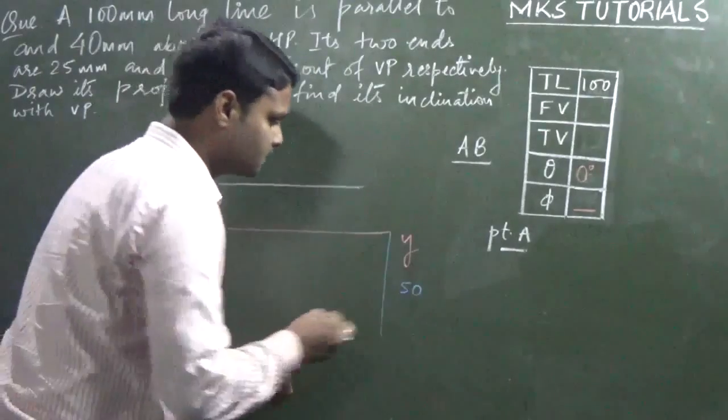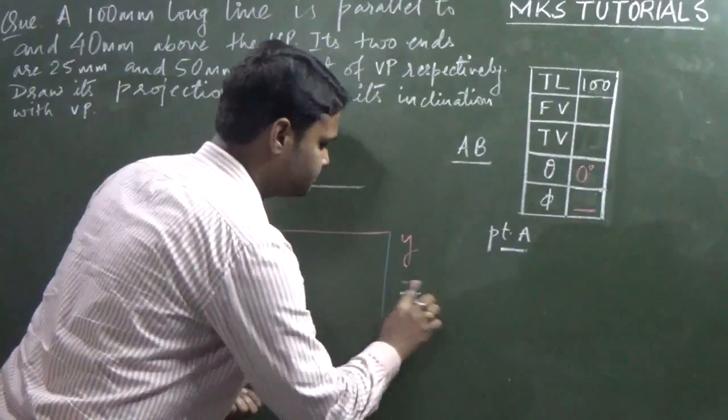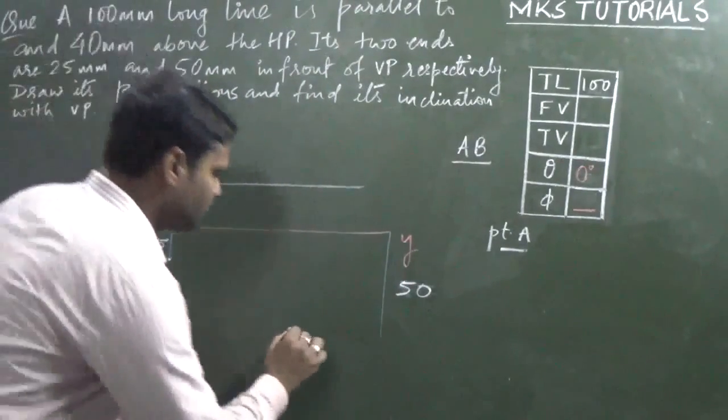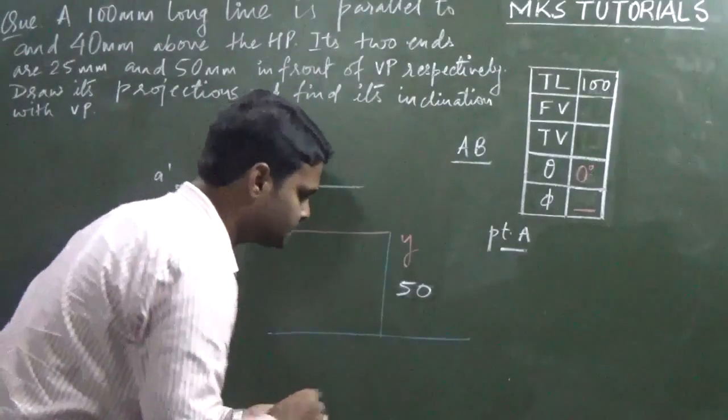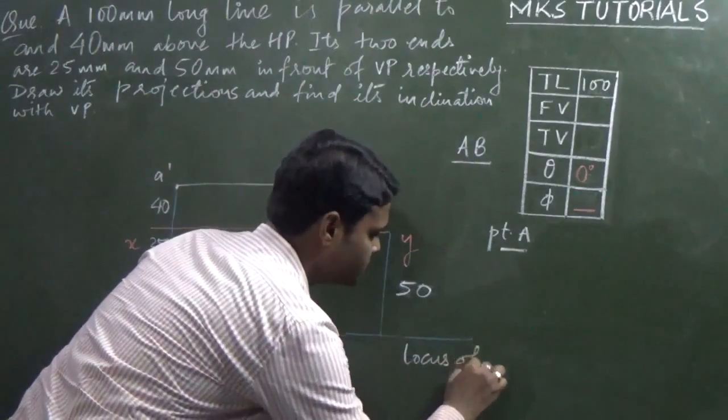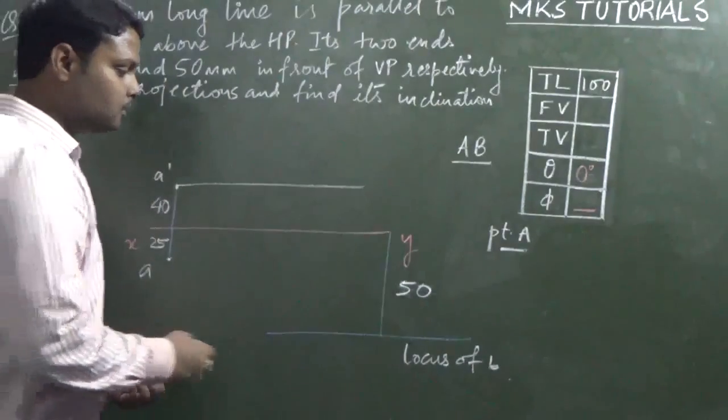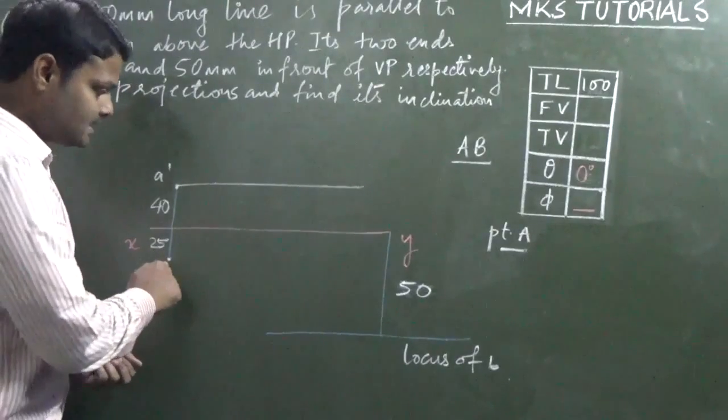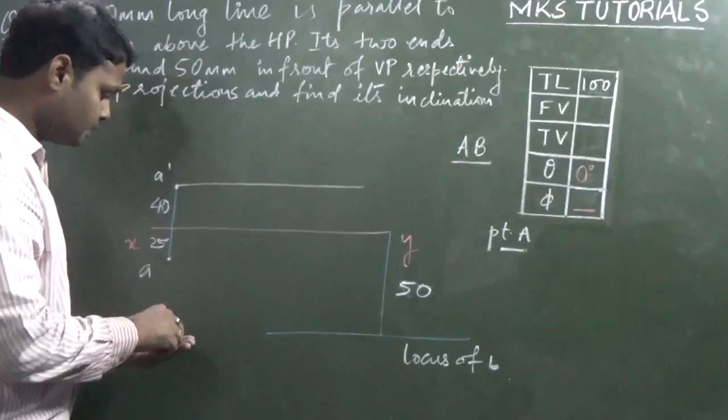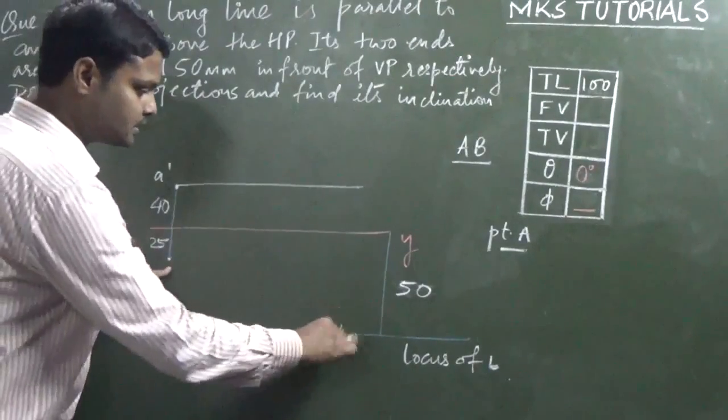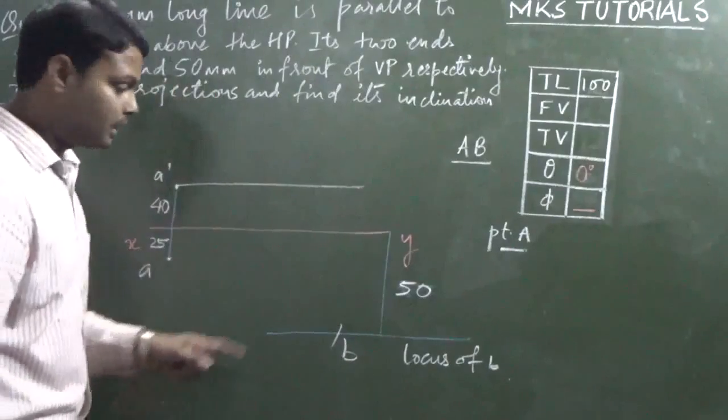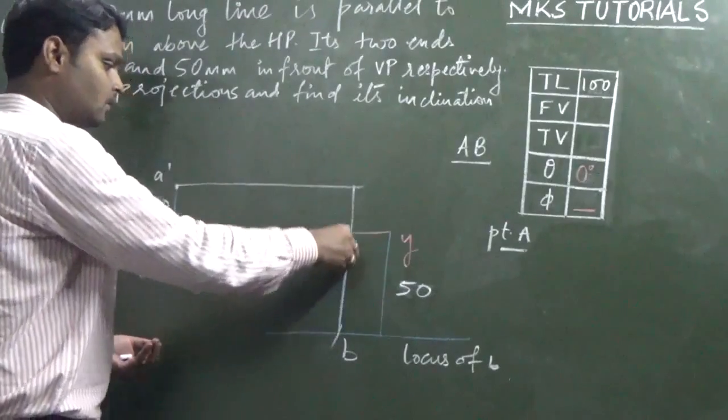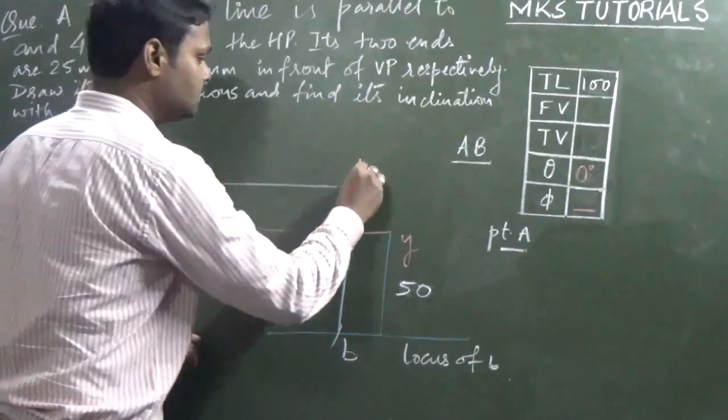This is 50mm. Now I know exactly where B is. So we will draw a locus. This is locus of B. Because we know that B is here and XY is here. You know that from A to B, the distance is 100. So we will cut. This point is B.